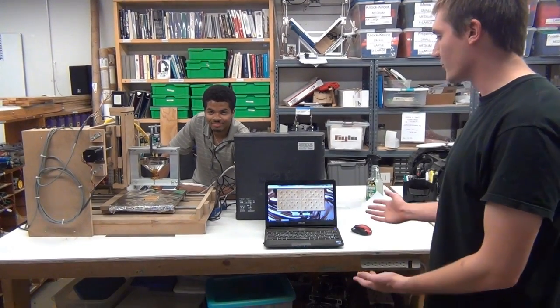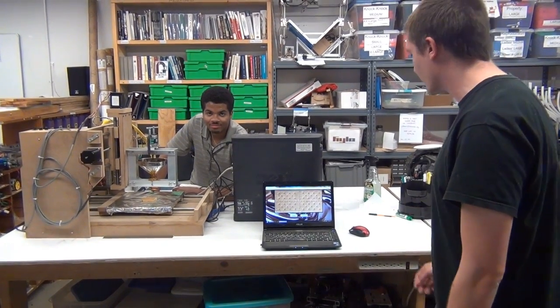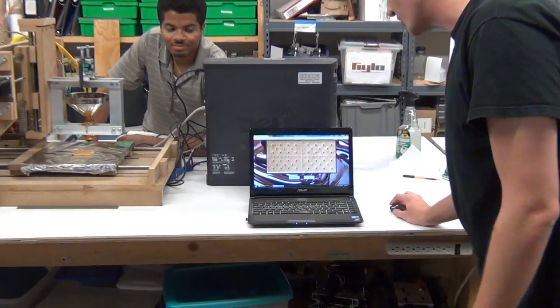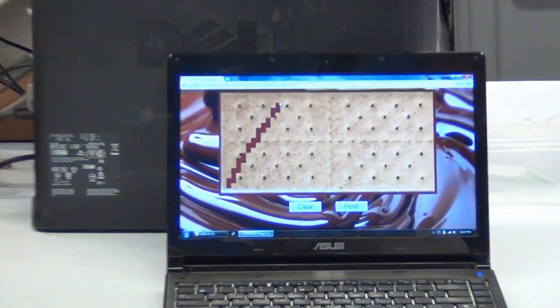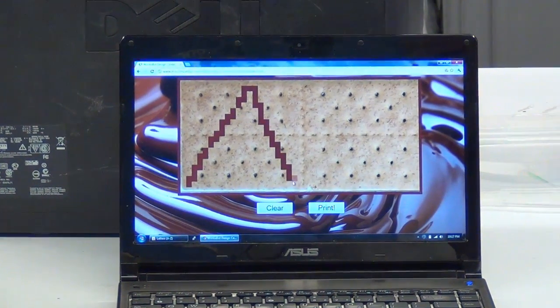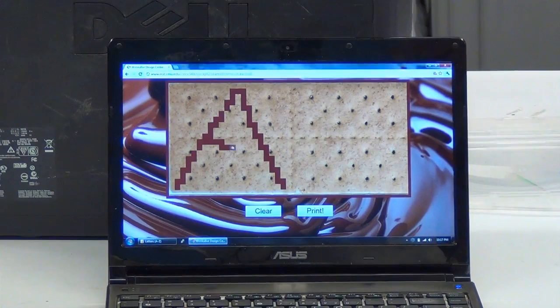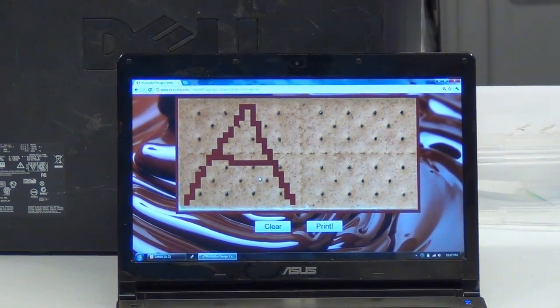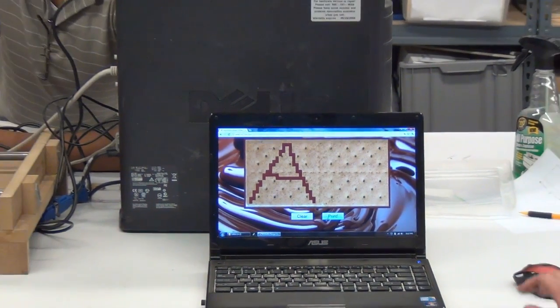So here's an end-to-end demo of our working system. We have a web interface for people to put in whatever they'd like to be printed. So for instance, if you wanted to print an A, just drag an A with the mouse, and then press the print button, and it should start to print.